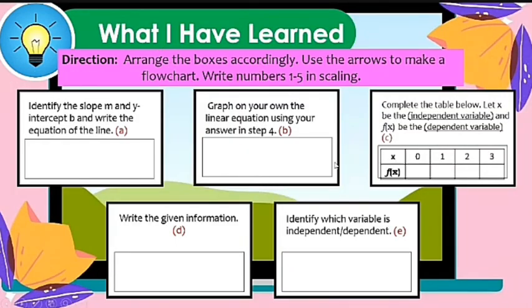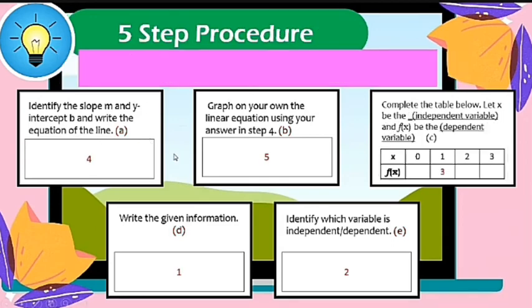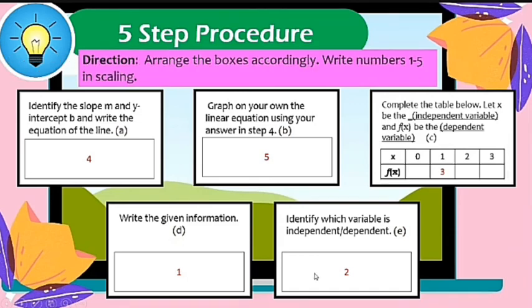What I have learned. I want you to arrange the boxes accordingly. You may use arrows or just write numbers 1 to 5 for scaling. I have here 5 boxes that you need to arrange using numbers 1 to 5. So let us have the answers. This is the first step: Write the given information. Second step: Identify which variable is independent and dependent. Box number 3: Complete the table. Let X be the independent variable and f(x) be the dependent variable. Identify the slope M and Y intercept B and write the equation of the line or function. And then graph on your own the linear equation using your answer in step 4.